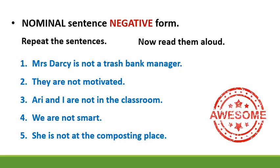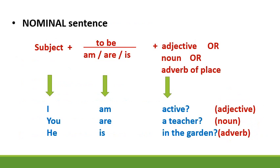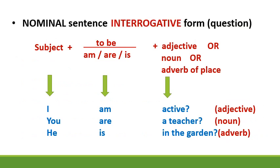Awesome. Now let's take a look at nominal sentence interrogative form — this means a question. We have the same elements: subject, am, are, is, adjective, noun, adverb of place. But we have to change the position of one of these elements. Am, are, is does not take the middle place — it moves to the beginning of the sentence.